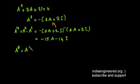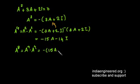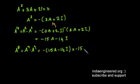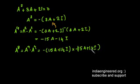From A power 4, we compute A power 8 as A power 4 times A power 4 — that is, (minus 15A minus 14I) times (minus 15A minus 14I). Again, after expanding and substituting for the A squared term that appears in this product, we obtain the expression for A power 8.